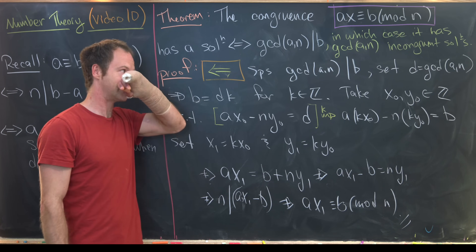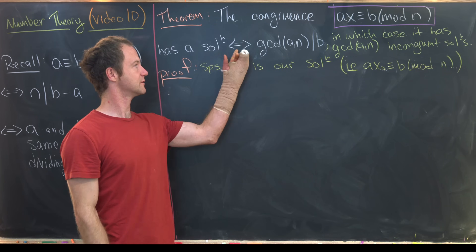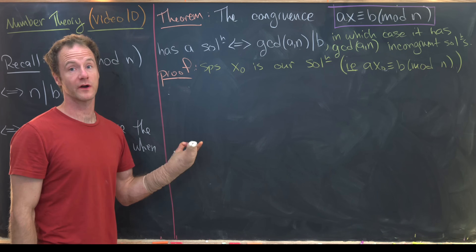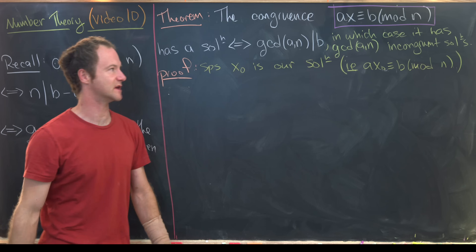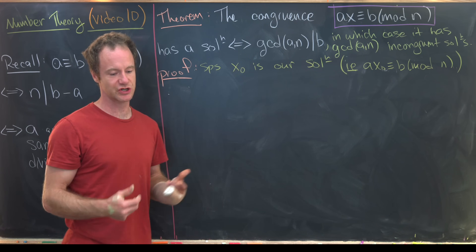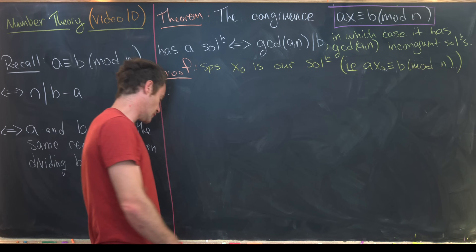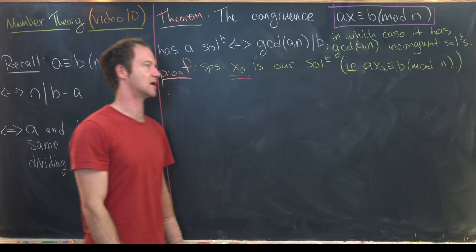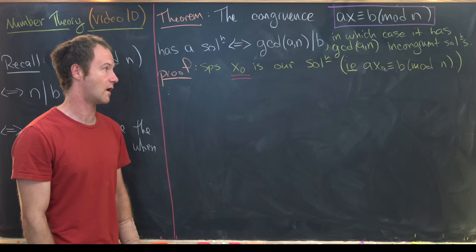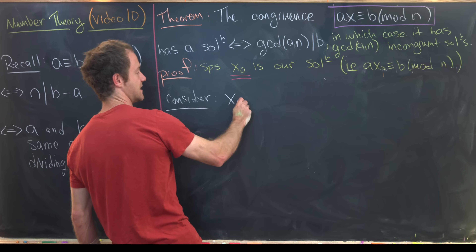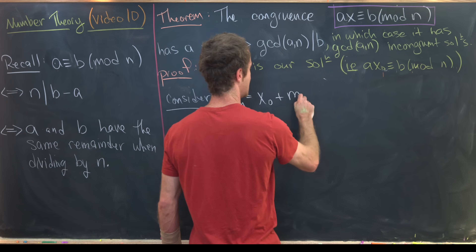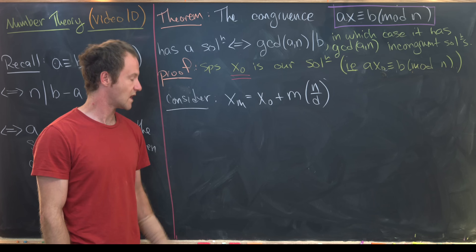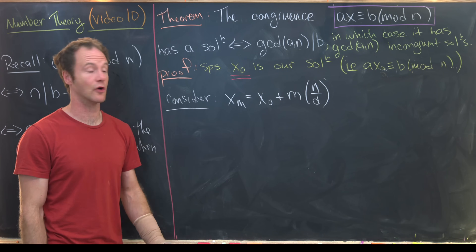We've proved the equivalence. Now let's prove how many incongruent solutions there are. We already have one solution — call it x₀, our seed solution — with ax₀ ≡ b mod n. We consider xₘ = x₀ plus m times n/d. Since d divides n, n/d is an integer. We take m between 0 and d minus 1, giving exactly d values.